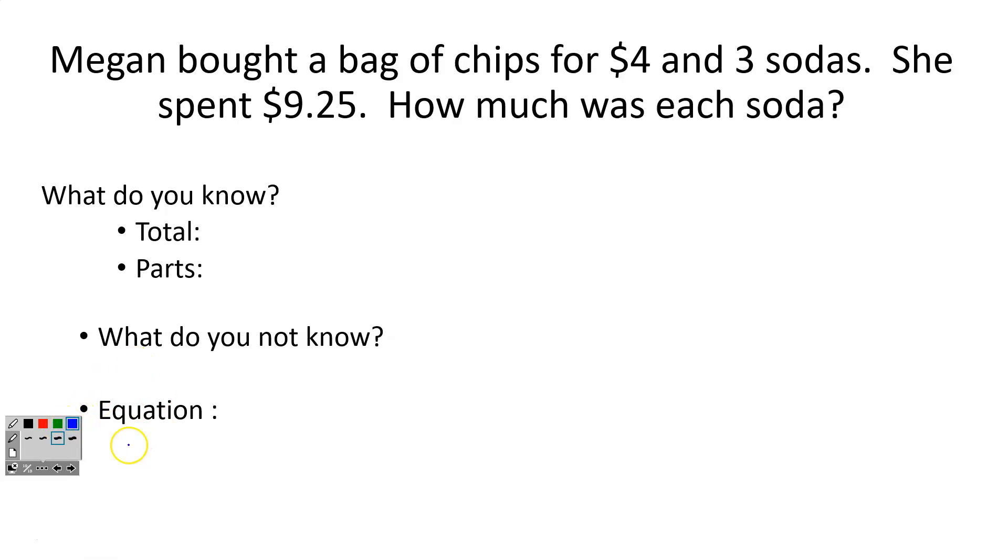Last one. Megan bought a bag of chips for $4 and three sodas. If she spent $9.25, how much was each soda? Well, I know my total. Total was $9.25. What parts do I know? Chips were $4 and three sodas. So when I look at that, I see two parts. So I know this is going to be a two-step equation. What do I not know? I don't know how much each soda was. I don't know the cost for each soda. So I'm going to use C for cost.